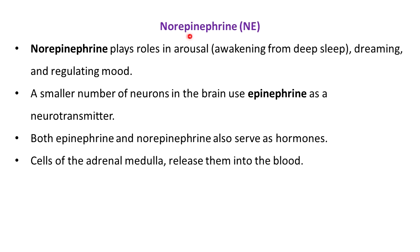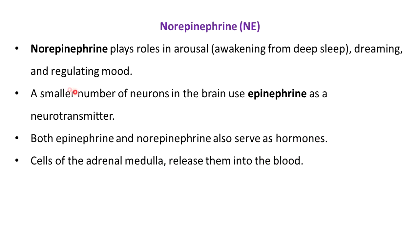Norepinephrine plays a role in arousal — awakening from deep sleep — dreaming, and regulating mood. A smaller number of neurons in the brain use epinephrine as a neurotransmitter. Both epinephrine and norepinephrine also serve as hormones. Cells of the adrenal medulla release them into the blood, where they act as both hormones and neurotransmitters.